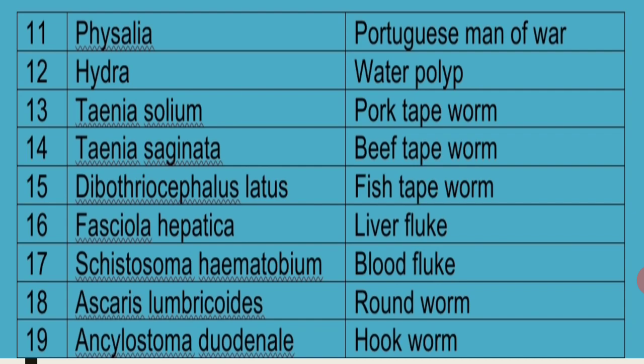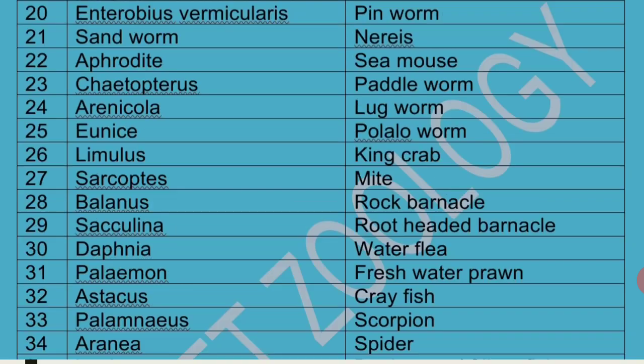Ascaris Lumbricoides is called Round Worm. Ankylostoma Duodenale is called Hook Worm because of its hook-like shape. Enterobius Vermicularis is commonly called Pin Worm.